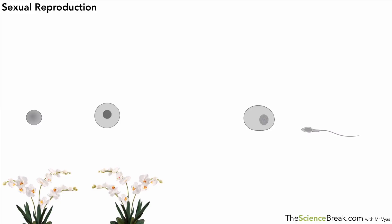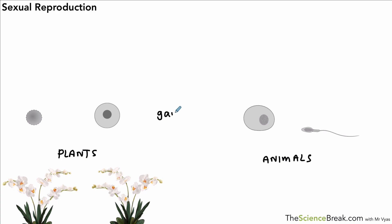In this video we're going to look at two types of reproduction: sexual and asexual reproduction. The first slide deals with sexual reproduction, which can happen in both plants and animals. A key feature of sexual reproduction is the production of gametes.